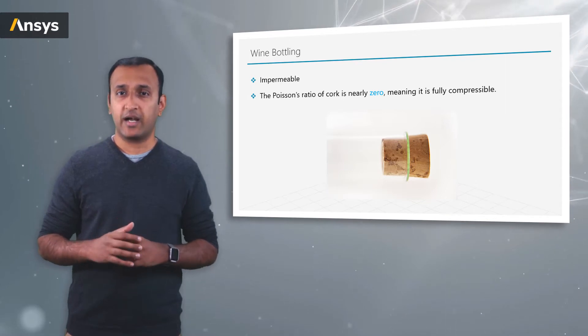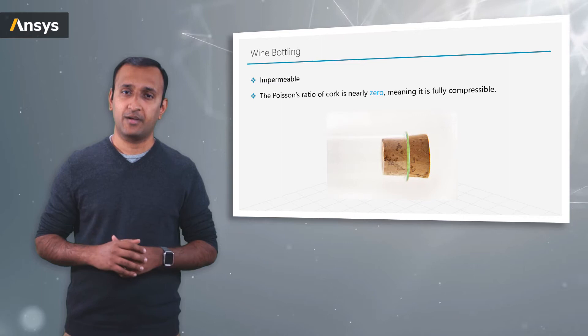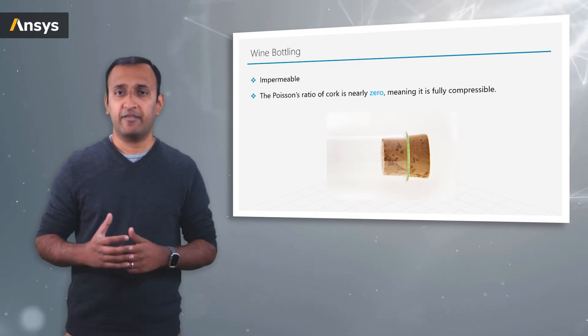So this makes cork an ideal choice for making stoppers for wine bottles. But why does compressibility play such a crucial factor here?